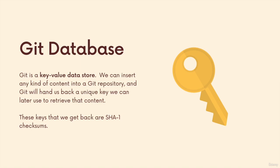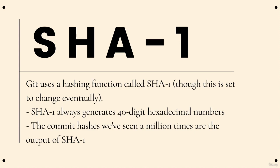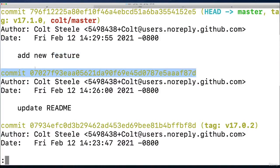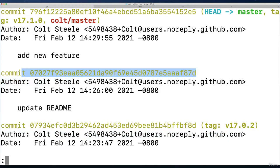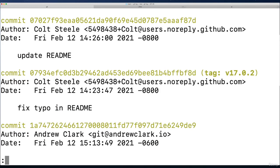If you skipped the last video because you know hashing functions, the only thing you missed relevant to Git is that Git uses a specific hashing function called SHA1. Although this is set to change eventually, it still uses SHA1. It generates 40-digit hexadecimal numbers — exactly what we've been seeing. This is the output of the SHA1 algorithm, and these are commit hashes, 40-digit commit hashes. But Git actually uses SHA1 in many, many other places, not just to generate commit hashes.